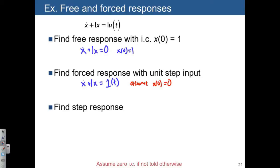Find the step response. Well, this is the same thing. We want to set u equal to one of t. And again, because we weren't told the initial conditions, we can assume x of zero is equal to zero.